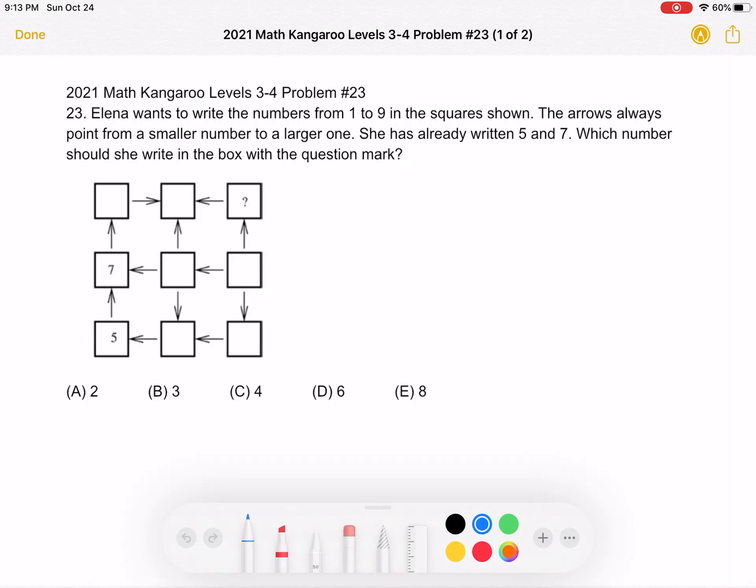Elena wants to write the numbers from 1 to 9 in the squares shown. The arrows always point from a smaller number to a larger one. She has already written 5 and 7. Which number should she write in the box with the question mark?